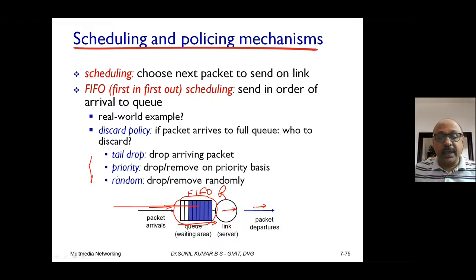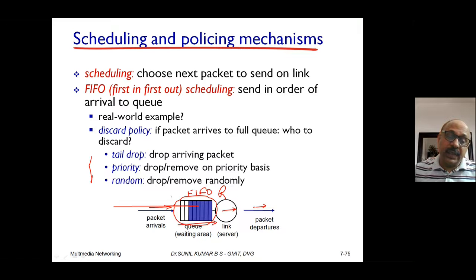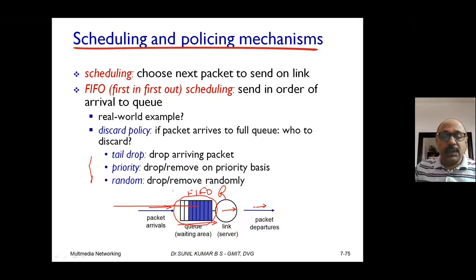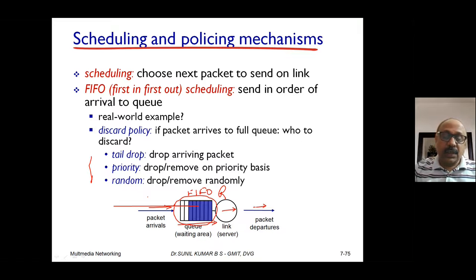The storage of these packets and giving service to them depends on the policy called First In First Out. Other discard policies include tail drop, priority, and random-based. If the buffer is full, excess packets will be dropped from the network system so they can never be transmitted further. Alternatively, we can have a priority set so that rather than going with arrival order, we give priority to different packets so they can be delivered according to their priority. The third possibility is random, where removal is on a random basis — not just tail-end packets but other packets can be removed as well.